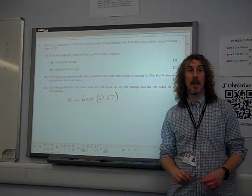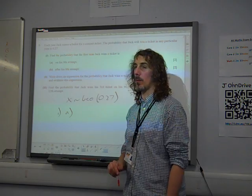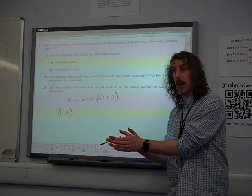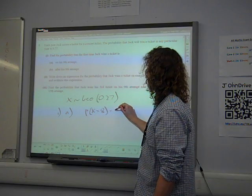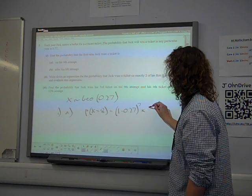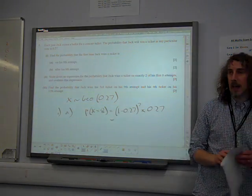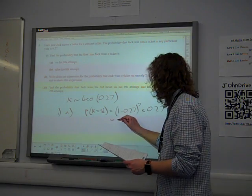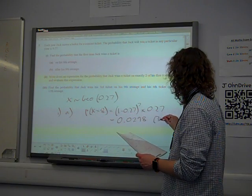So the probability of it being the eighth attempt. Hopefully we know how the geometric distribution works. Eighth attempt means we have seven failures followed by a success on the eighth. So the probability of X being eight is seven failures, (1 minus 0.27) to the 7, times our final glorious success. And that, if you work that out, gives us 0.0298 to three significant figures.